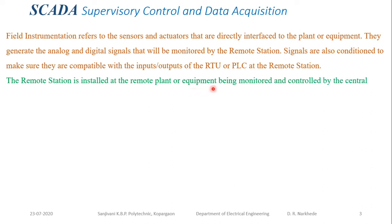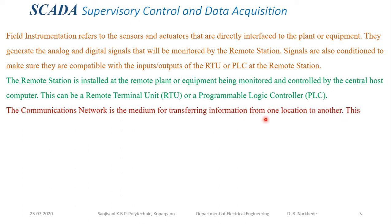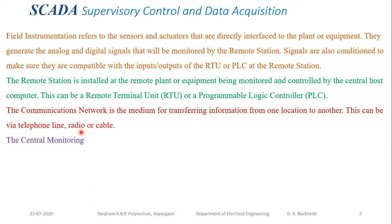The remote station is installed at the remote plant or equipment being monitored and controlled by the central host computer. This can be a Remote Terminal Unit (RTU) or a Programmable Logic Controller (PLC). For large machines, a dedicated PLC or remote terminal is placed there for monitoring and controlling the process. The communication network is the medium for transferring information from one location to another — via telephone lines, radio, or cables.